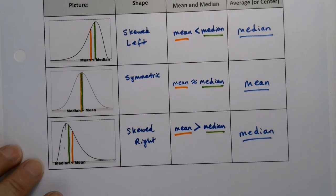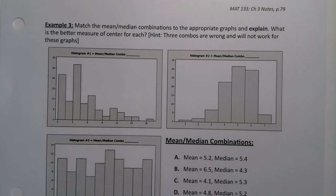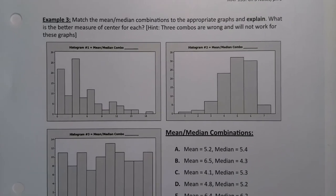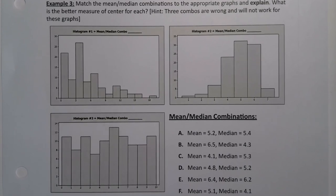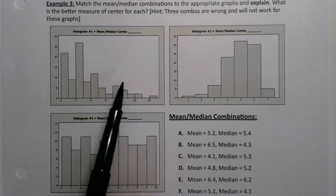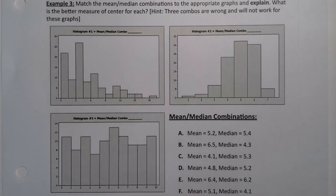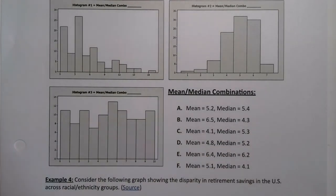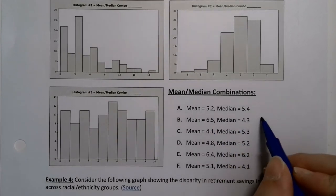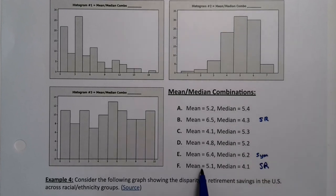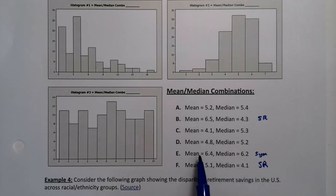Now, let's keep that table in mind for actually applying it to a problem. We want to match the mean-median combinations to the appropriate graphs and explain what is the better measure of center for each graph. One thing I notice is that this top graph is skewed right. So when it's skewed right, I want to look for a combination where the mean is bigger than the median. Let's look through the list. Which ones are some candidates for skewed right? Mean bigger than the median, so that one's skewed right. This one, greater than but not by much, that's pretty symmetric. I'd say that one's symmetric. This one is skewed right because you want the mean to be significantly bigger than the median, not just like a tiny bit bigger.